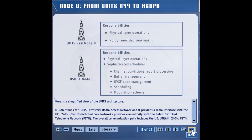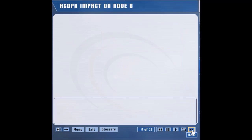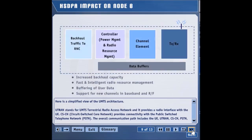The Node B controls resources such as power and codes dynamically. Since higher data rates are supported, a significant amount of buffer capacity and backhaul capacity are required. A new baseband chip set that does the physical layer processing to support new HSDPA physical channels is required. Since scheduling is now done at the Node B, associated software changes are also required. Node B is the most affected element in the evolution from Release 99 to HSDPA.